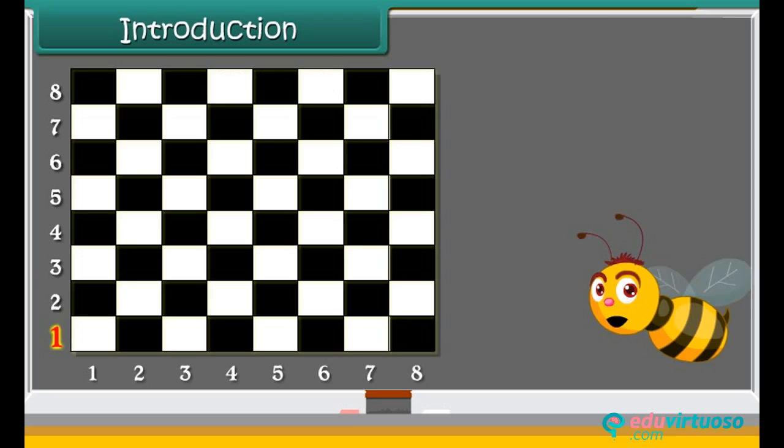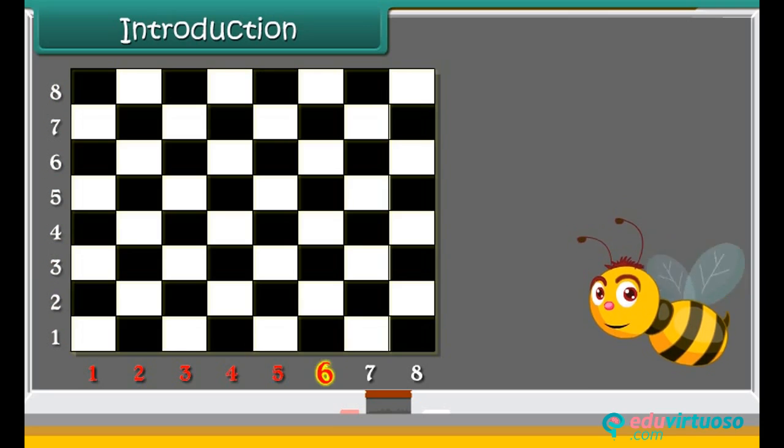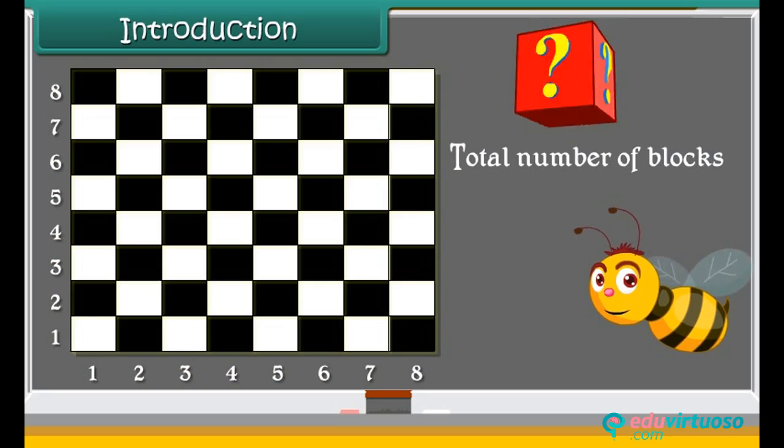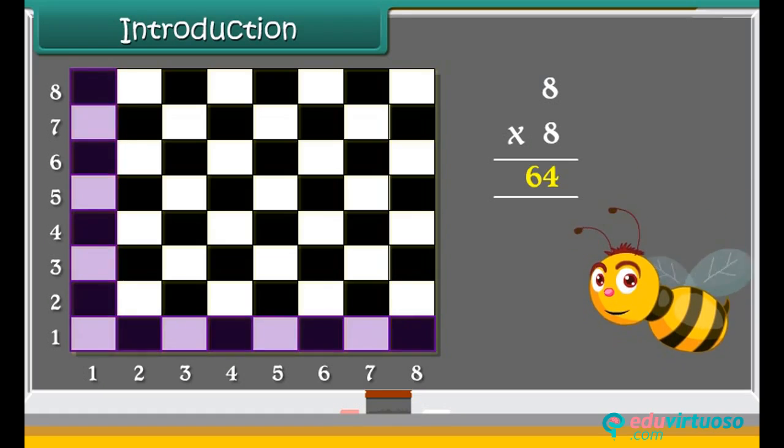Introduction: A chess board has 8 rows and 8 columns. Can you tell the total number of blocks in the board? Yes, we can calculate by multiplying both the numbers. Let's study about multiplication.